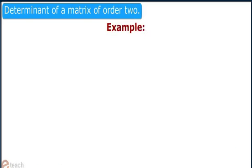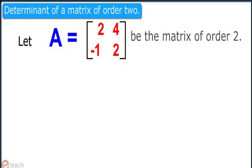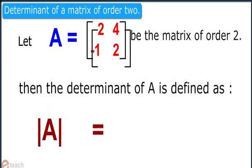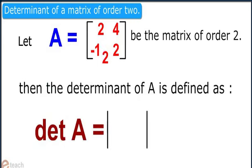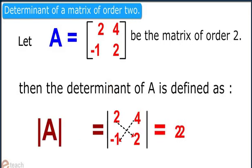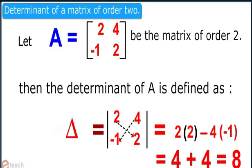Let us have an example. Let A be the matrix of order 2. Then the determinant of A is defined as follows, and the value of determinant A equals 2 into 2 minus 4 into minus 1, which equals 8.